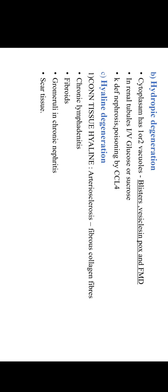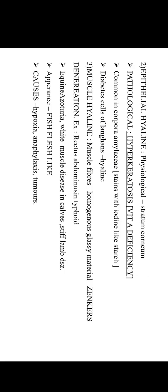Next is hyaline degeneration, which has three types: connective tissue hyaline, epithelial hyaline, and muscle hyaline. Important examples under connective tissue hyaline are arteriosclerosis and scar tissue. Under epithelial hyaline, a classical example is stratum corneum. The stratum corneum of the skin is physiological, but the pathological condition is hyperkeratosis — excessive keratinization of the skin — which is seen in vitamin A deficiency.